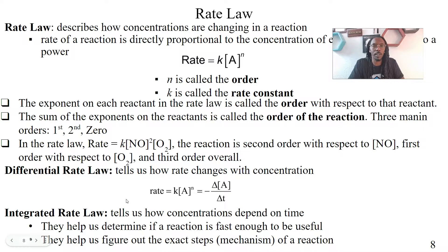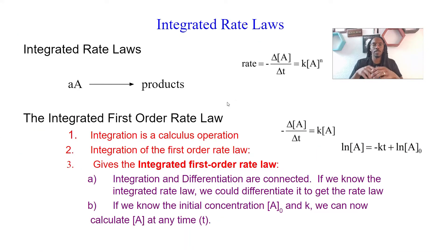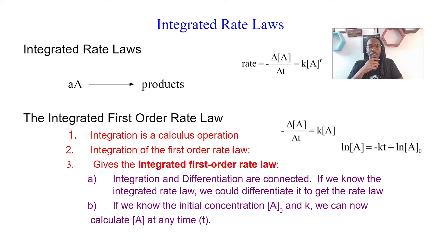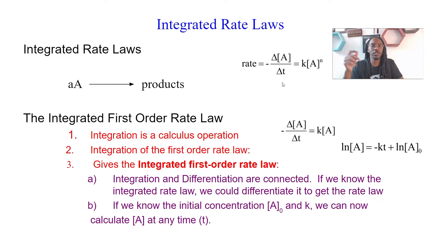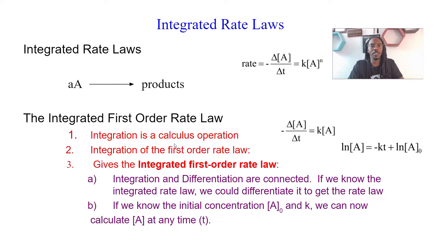The integrated rate law is very cool — it basically lets us tell the concentration in terms of how it relates to time. When we're talking about integrated rate law, we're going to talk about zero order, first order, and second order. We'll talk about first order first. The key thing to understand is that integrated rate law gives us concentration with the dependence of time. This integration is actually a calculus operation.